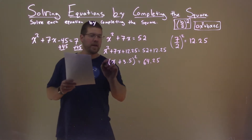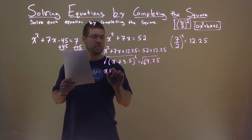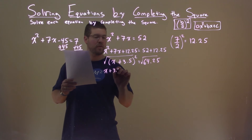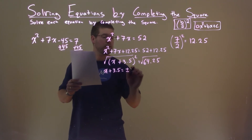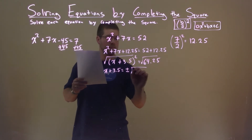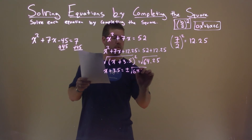We then have to take the square root of both sides, and we have x plus 3.5 equals plus or minus the square root of 64.25.